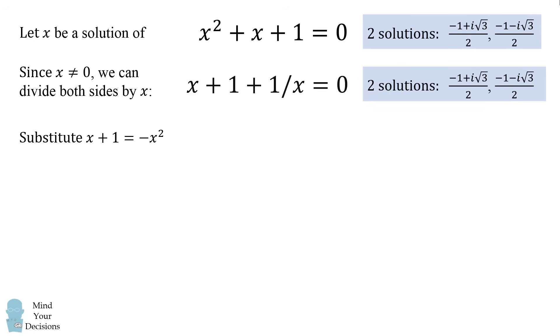Now we're going to substitute x + 1 = -x². We get the equation -x² + 1/x = 0. Now what happens when you solve this equation?